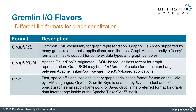GraphSON is an Apache TinkerPop-originated JSON-like format. It's lossless and the text format of choice for interchanging data between Apache TinkerPop-aware non-JVM-based applications. Gryo is an extremely efficient lossless binary graph format for use on the JVM.